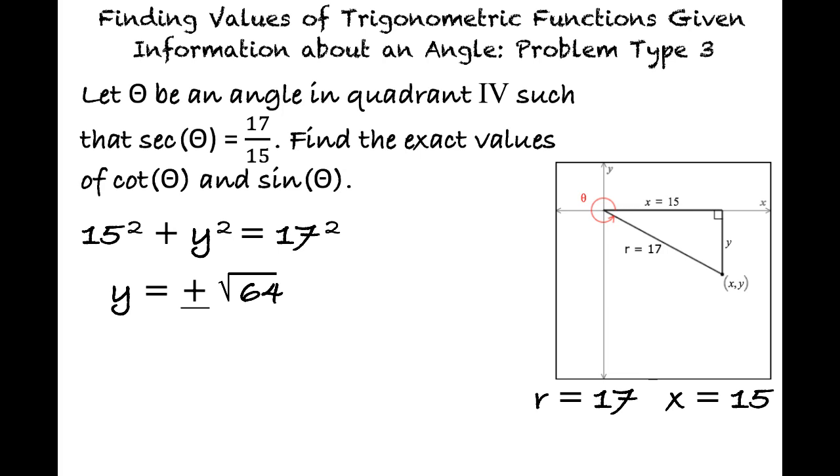However, since we know that the angle is in quadrant 4, where y is negative and x is positive, the y coordinate must be negative 8. Next, we can substitute side lengths into the trigonometric identities for cotangent and sine of theta. Cotangent of theta equals the adjacent over the opposite, which simplifies to negative 15 over 8, and sine of theta equals the opposite over the hypotenuse, which simplifies to negative 8 seventeenths.